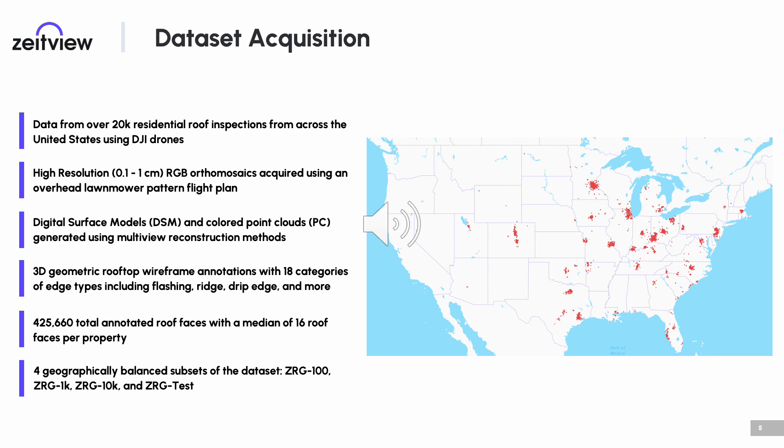The dataset is annotated with 3D rooftop geometry wireframes, and each edge type is categorized into 18 distinct classes. To prepare the dataset for benchmarking, we provide three training splits and a holdout test set, which are geographically balanced for generalization.